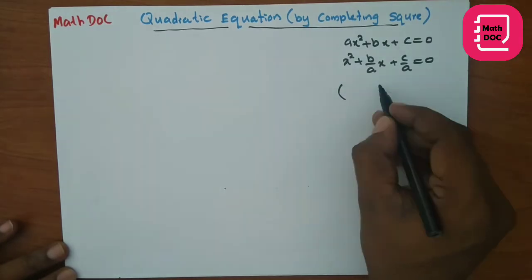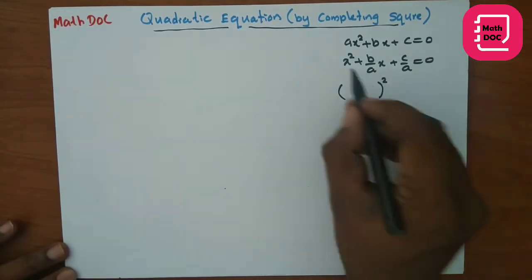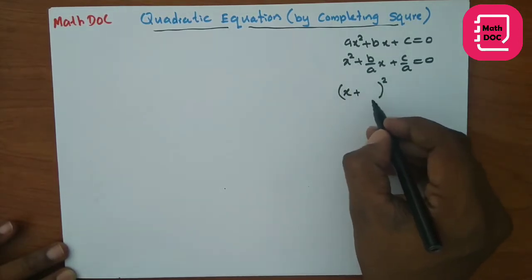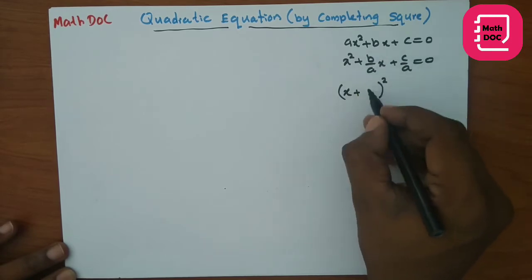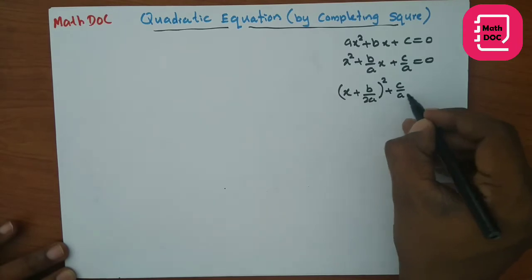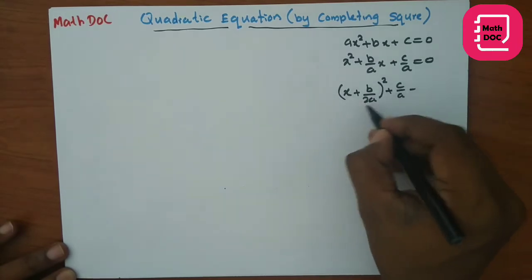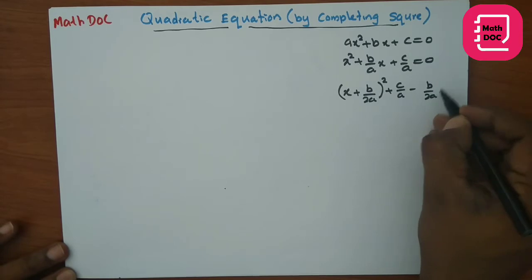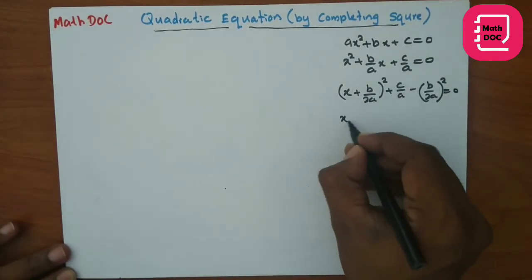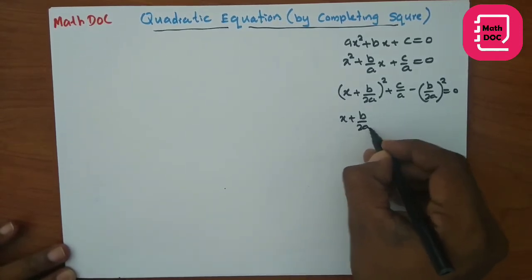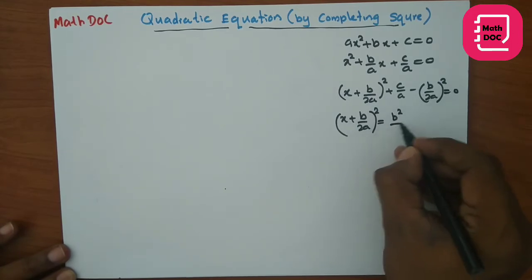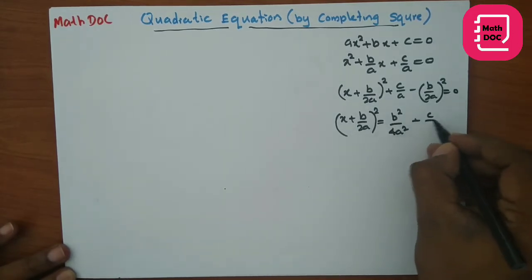Now we write a perfect square. Write x², then a plus sign as it is. Take the x coefficient, divide it by 2, write it here, keep the constant as it is, and subtract the square of that constant.